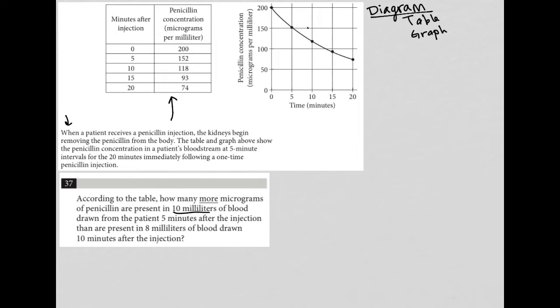So first of all, we have the first scenario. So our first scenario is 10 milliliters at five minutes. So five minutes post-injection takes us here, and we know that at five minutes we have 152, what are the units? It's micrograms.